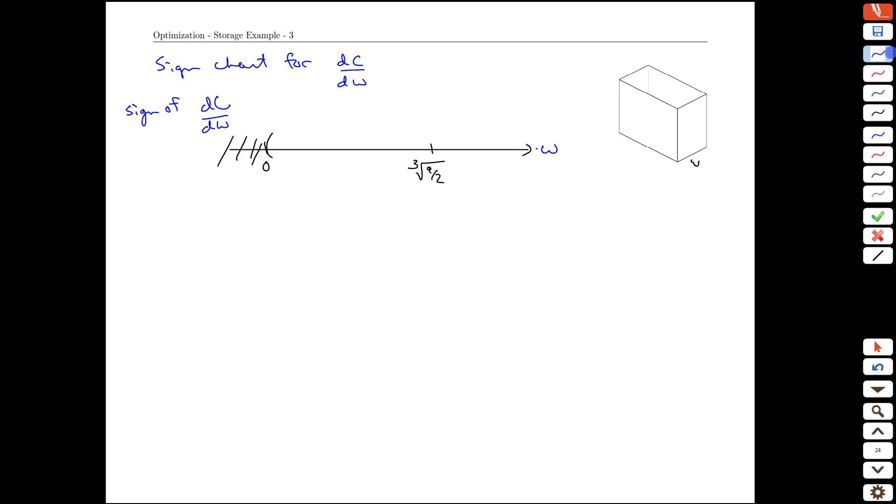All right. So what happens when w is less than the cube root of 9 halves? Well, our derivative was 40w minus 180 over w squared. Again, you can put in real values into this to check. We know the sign will be the same all the way in here because the sign of the derivative is zero exactly at this one point and nowhere else. So that means in this interval, it has to be always positive or always negative. If you plug in smaller values here, what you're going to find is you get a negative sign. You can plug in one point five, something like that. You're going to get a negative value for the slope.